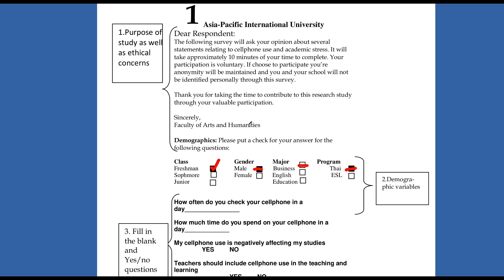You're going to have at least three sections in your survey, maybe four sections. At the top, you're going to have your purpose. This is for ethical reasons, so you explain how they're free to participate, consent to participate, how you're going to protect their identity, the purpose of the survey, et cetera. That's all in section number one.